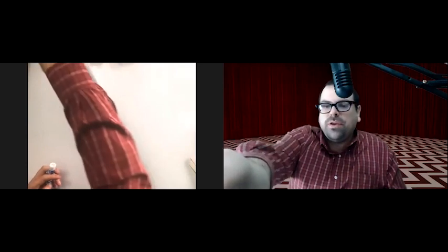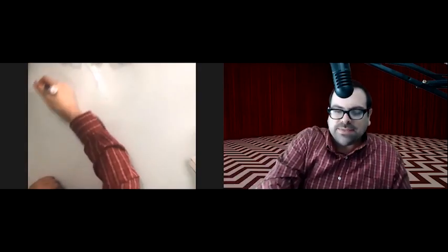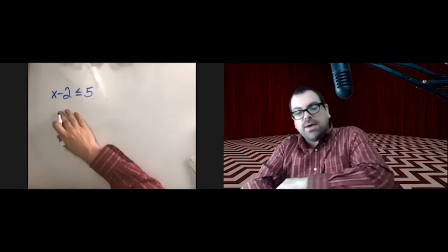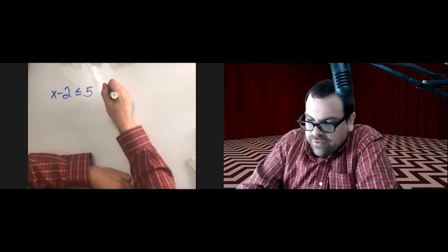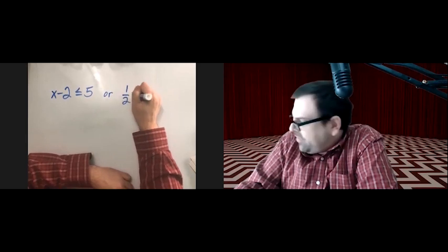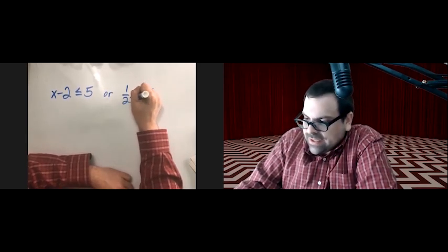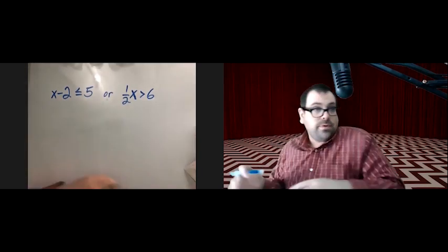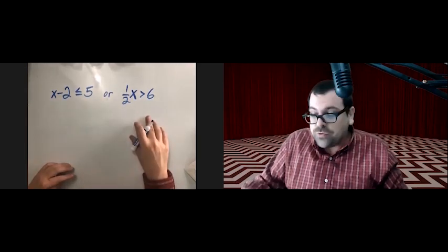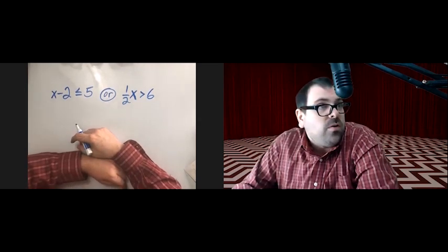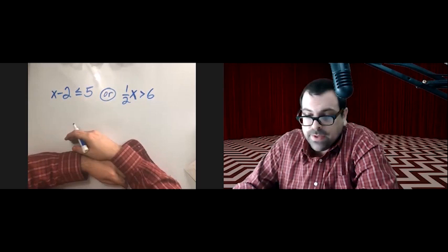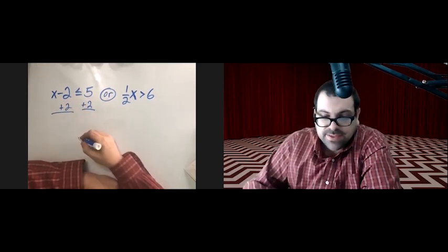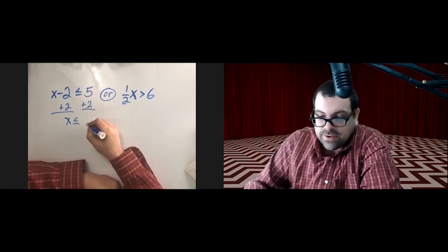Let's solve a compound inequality expressed as an OR statement: x minus 2 is less than or equal to 5, or one-half x is greater than 6. The first step is to solve each individually and then figure out what OR means for the problem. So for x minus 2 ≤ 5, we add 2 to both sides and get x ≤ 7.